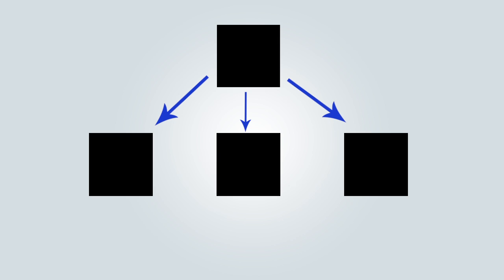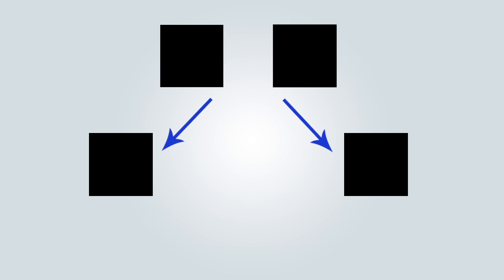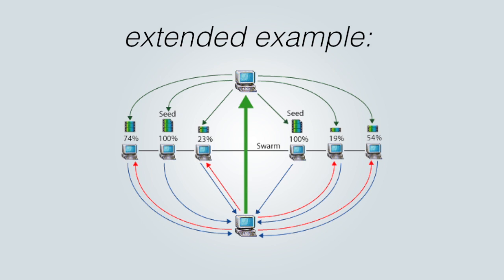Once someone finishes downloading, they then upload to the other people still downloading it. So now there are two seeders uploading to, say, 10 leeches. Then say another person finishes downloading — now there are three seeders all uploading to those nine people left over.